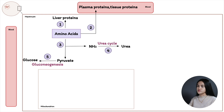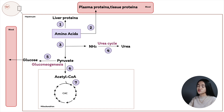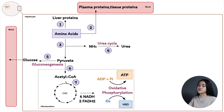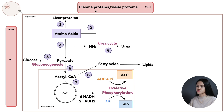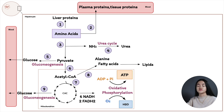Pyruvate can be used to form glucose and glycogen via gluconeogenesis, and this glucose is transported to the blood to replenish blood glucose levels. Pyruvate can also be oxidized to acetyl-CoA by the pyruvate dehydrogenase complex, and that acetyl-CoA can enter the citric acid cycle and oxidative phosphorylation to yield energy. Acetyl-CoA can also serve as a precursor for fatty acids and be converted to lipids for storage. Citric acid cycle intermediates can enter gluconeogenesis to yield glucose, and amino acids from muscle — such as alanine — can be transported to hepatocytes via transamination. In the liver, alanine is deaminated producing pyruvate and ammonia — referring back to the glucose-alanine cycle.